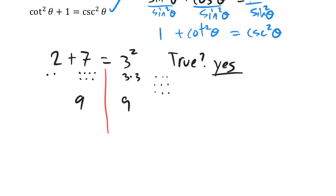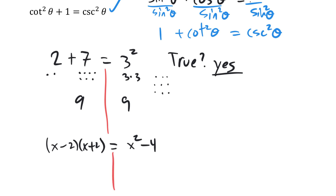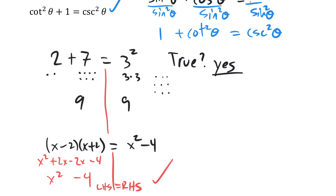We could also use it for verifying a factoring. If I told you that (x minus 2)(x plus 2) equals x squared minus 4, we would verify this by starting with the left side and using FOIL. So we get x squared plus 2x minus 2x minus 4. Then we clean up the middle terms and get x squared minus 4. The left side equals the right side, so this is a true formula.